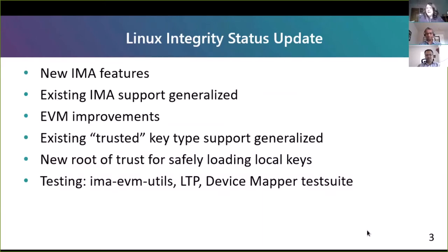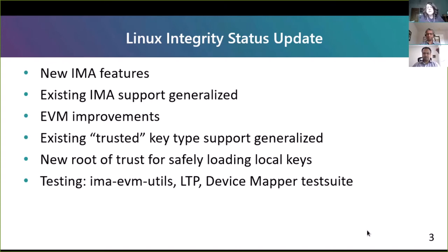After Tushar and Lakshmi do their section, I'll continue as per usual by describing other people's changes already upstream and some really close to being upstream. As you're aware, IMA has dependencies on the TPM key, key rings, and asymmetric key. EVM is dependent on the trusted key type, which was upstreamed to support the EVM HMAC key. So although they aren't part of the integrity subsystem, the integrity subsystem is dependent on them and I'm including them in this presentation. Two themes this year are generic and generalizing code.